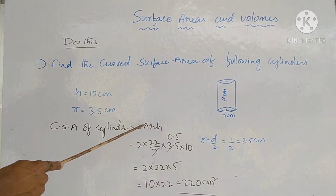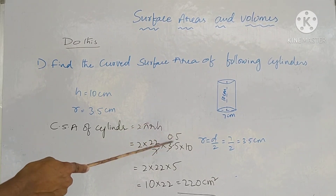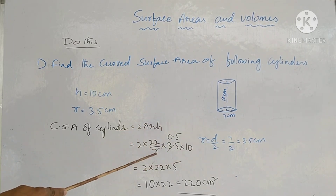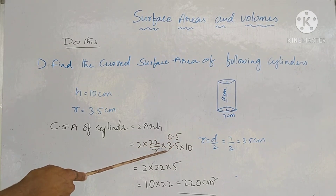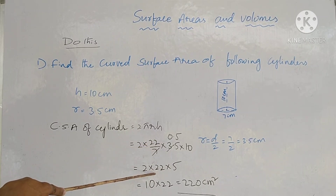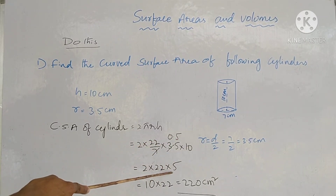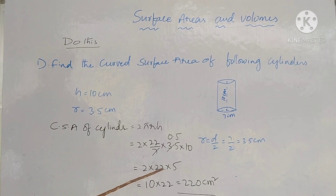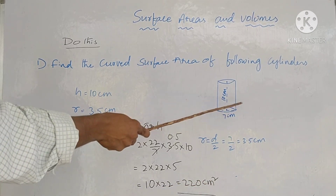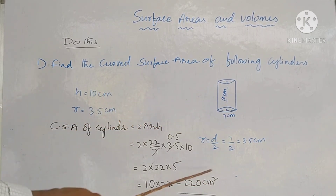CSA = 2 × (22/7) × 3.5 × 10. Here 3.5 ÷ 7 = 0.5, so: 2 × 22 × 0.5 × 10 = 2 × 22 × 5 = 2 × 110 = 220 cm². So the curved surface area of the cylinder is 220 centimeters square.